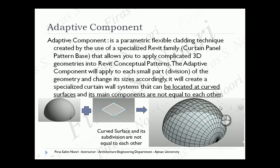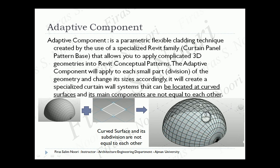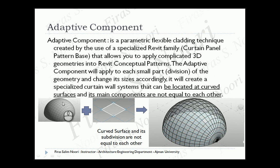With the curtain wall system, each part of the division is equal to each other by definition — equal by division or equal by distance, as covered in a previous lecture. But with the adaptive component, it follows the geometry. So if that's a sphere, the divisions follow its curvature.